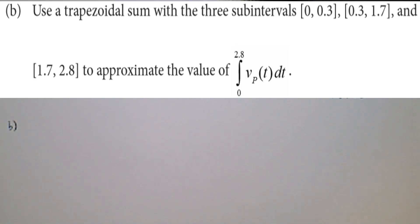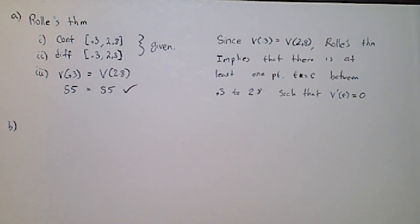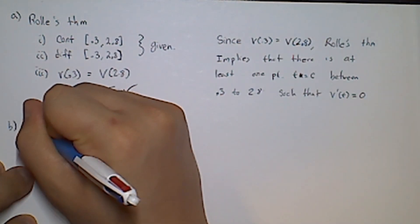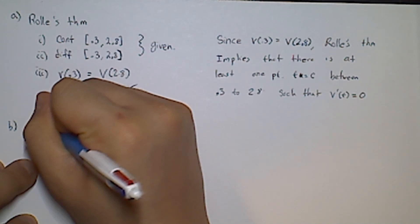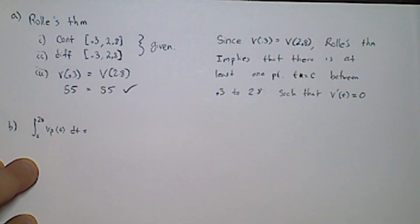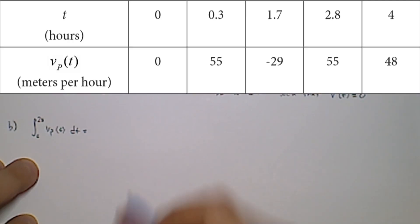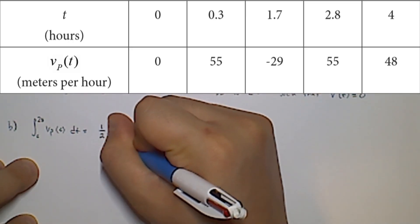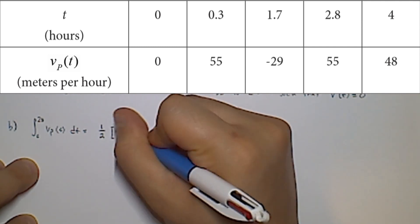Part B: use a trapezoidal sum with three sub-intervals — 0 to 0.3, 0.3 to 1.7, and 1.7 to 2.8 — to approximate the value of the integral of velocity from 0 to 2.8. We're going to break this into three trapezoids. Each trapezoid uses one half times the width of the sub-interval.